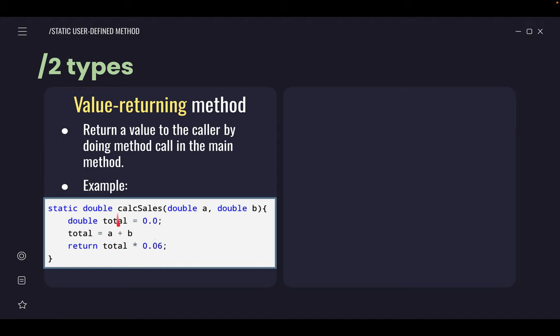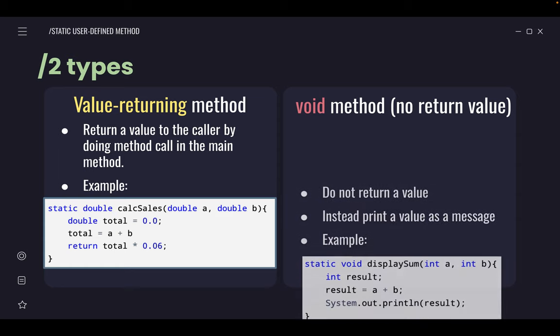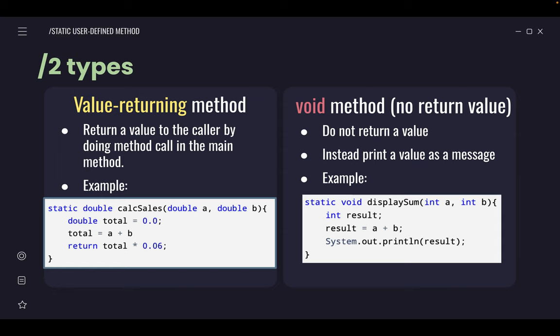Data type can be int, boolean, float, and so on. Next one is void method. It means there's no return value. The method essentially does not return a value, but instead prints out the value as a message. Compare the two codes side by side. Previously, there was a data type—we call it return type. And this one is void. Void means no return at all. So if you notice inside the method body, there's no word return. This one has the word return; this one doesn't. So remember, two types of static user-defined method: value-returning method and void method.